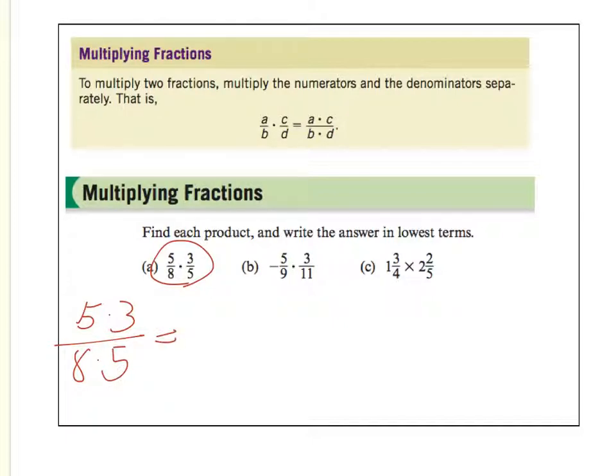Now, pay attention here. Before you start multiplying using your calculator, you should always cancel as much as possible. Why? Because the more we cancel, the more we can keep the numbers small, and that makes our calculation much easier. So right here, I have 5 upstairs, 5 downstairs. I can cancel these two. My final answer is 3 eighths.